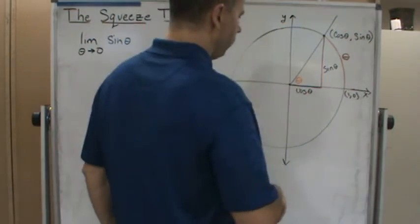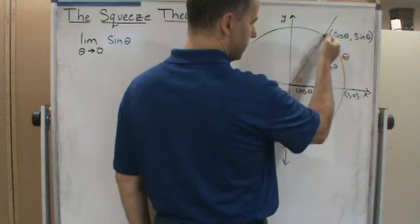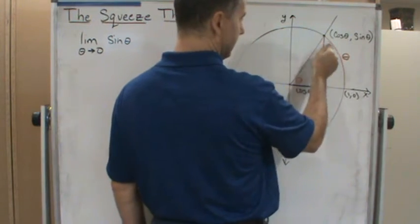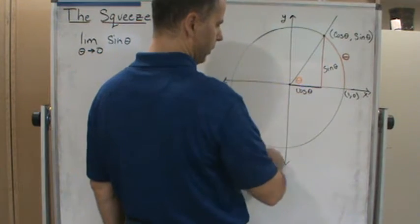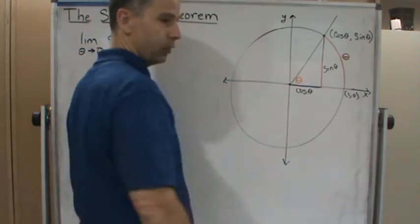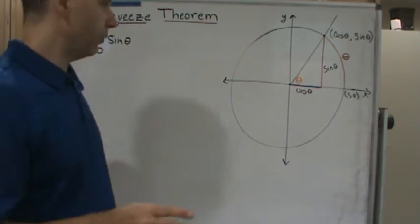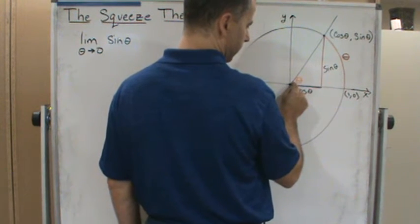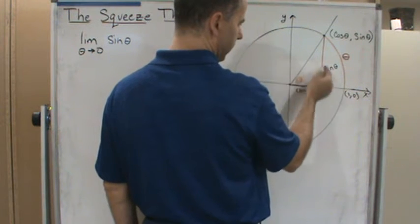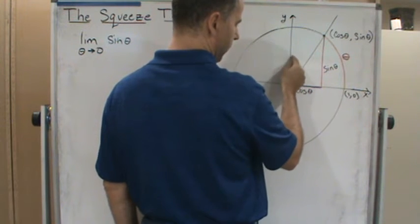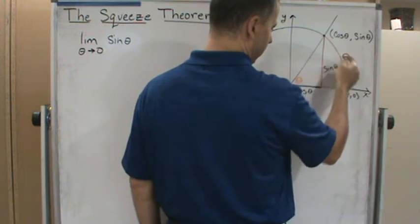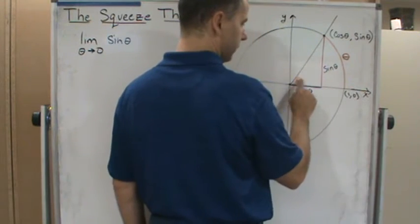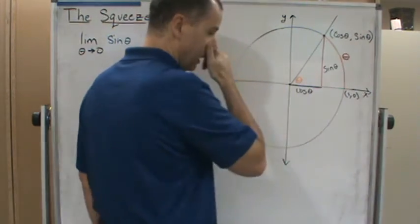On the unit circle, sine theta represents this vertical line segment — the y-coordinate of the point on the unit circle. As you go around the unit circle, sine theta bounces back and forth between one and negative one. We're interested in the relationship between sine theta and theta, because in the first quadrant theta goes from zero to pi over two, and this arc length also represents the radian measure, which is also theta — the central angle.